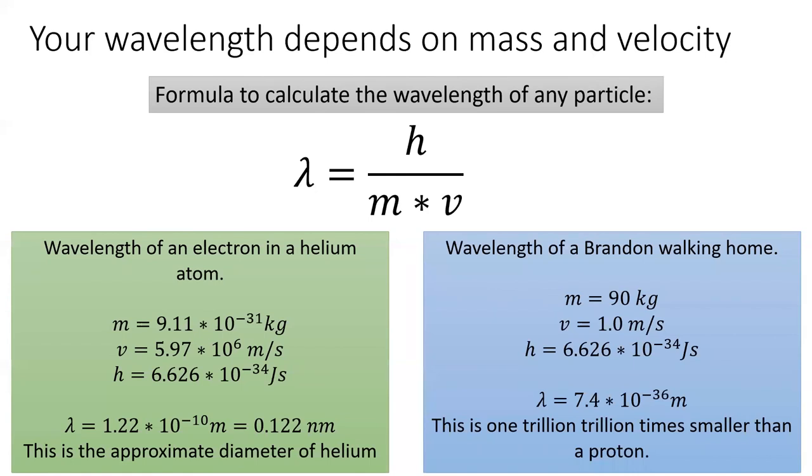Now I'd like to calculate my wavelength as I walk home. Including my backpack, I weigh about 90 kilograms, and let's say I'm walking very slowly at a pace of about 1 meter per second. My wavelength would be 7 times 10 to the negative 34 meters, meaning the uncertainty in my position would be a trillion trillion times smaller than even that of a single proton.